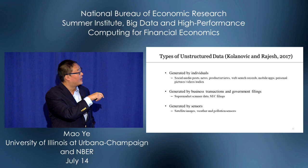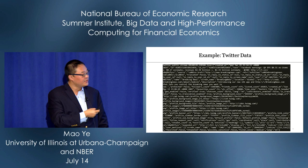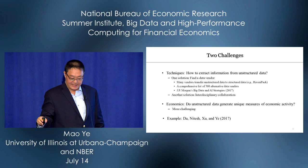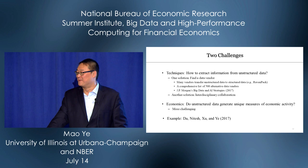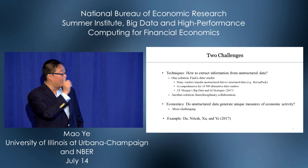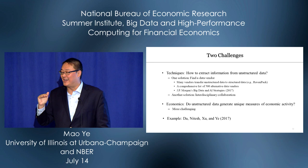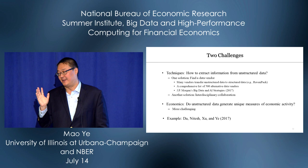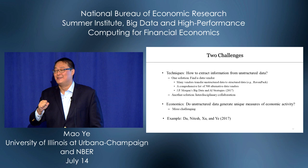Let me start with the individuals category. When we see unstructured data, there are two challenges. Number one is how to extract information. There are two ways: the first, surprisingly simple, is to find a data vendor. JP Morgan's manual has 77 pages listing alternative data vendors. The majority of them do one thing: they transform unstructured data to structured panel data. Many use machine learning techniques to generate structured data from satellite images and other sources.